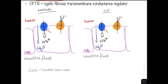What happens in cystic fibrosis is that the CFTR fails to take chloride out of the cell and fails to inhibit sodium movement into the cell. Thus sodium continues to move into the cell alongside water.